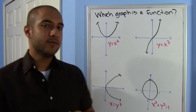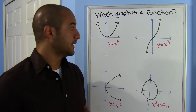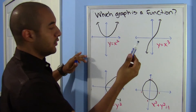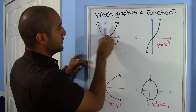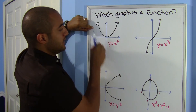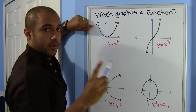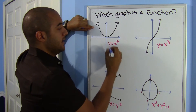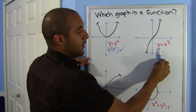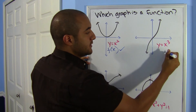If they give you a graph and ask whether it's a function, you can do what's called a vertical line test. Usually I'll hold my pencil and scoot it over to see how many times the graph hits it. For y equals x squared, wherever I place it, the graph only hits it one time — so this is a function. Likewise for y equals x cubed: wherever I put it, this is also a function.